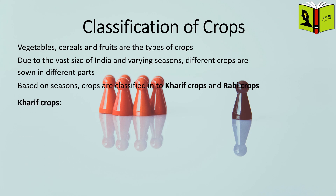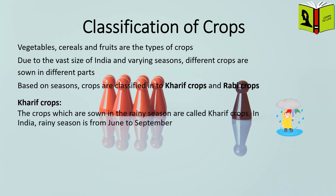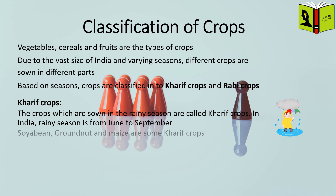Kharif crops. The crops which are sown in the rainy season are called Kharif crops. In India, the rainy season is from June to September. Soybean, groundnut, and maize are some Kharif crops.